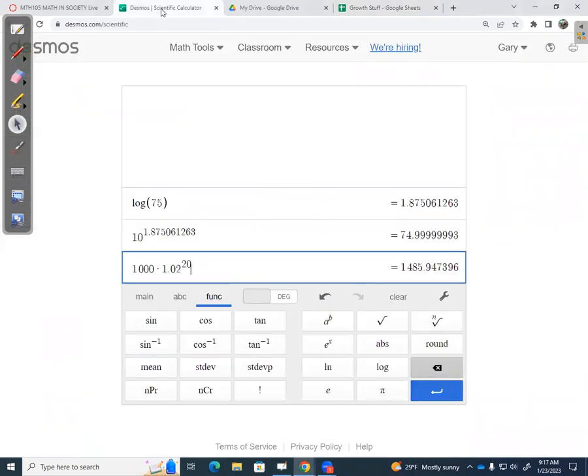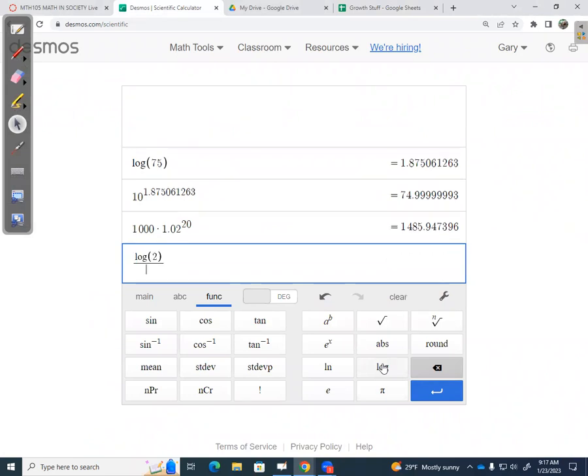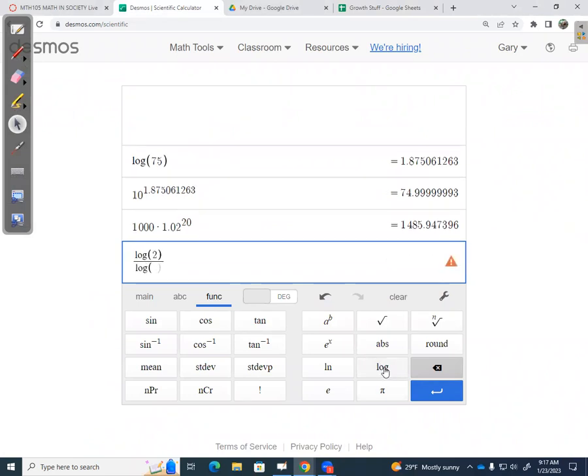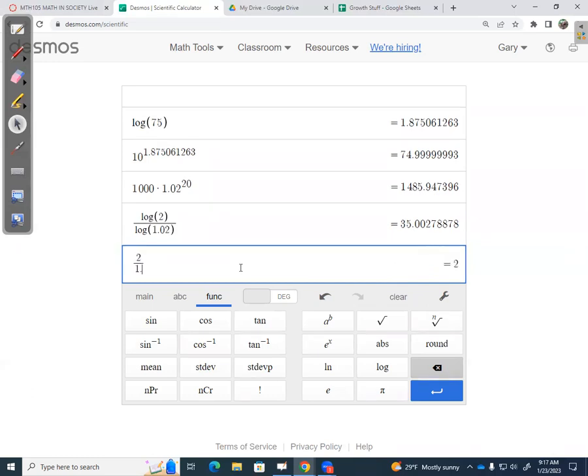So if I go over to my calculator here and I say, hey, calculator, what is the log of 2 divided by the log of 1.02? It says it's about 35. And on my spreadsheet, it looked like it was going to happen in about 35 years. So that's reassuring. Now check this out. What if I take 2 divided by 1.02 and just say, hey, the logs can just be canceled? Totally different results.